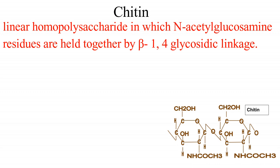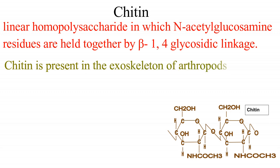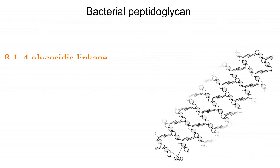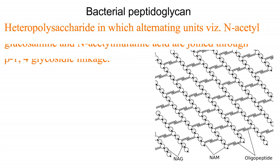Chitin is a linear homopolysaccharide in which N-acetylglucosamine residues are held together by beta-1,4 glycosidic linkage. Chitin is present in the exoskeleton of arthropods and fungi. Chitin cannot be digested by vertebrates.